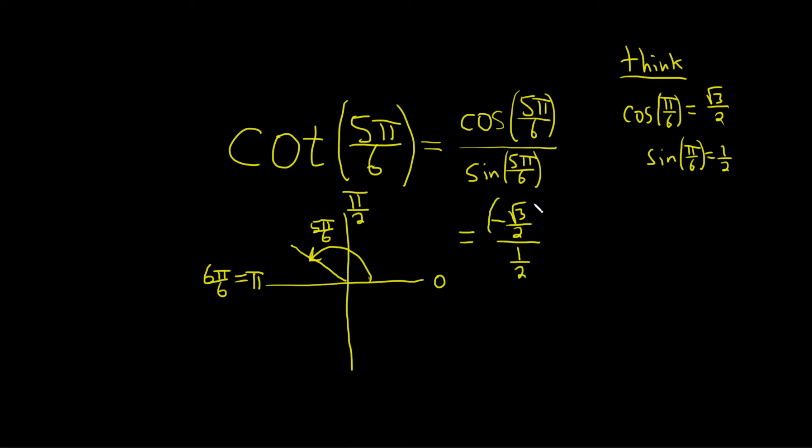It's a lot of information in a simple-looking problem. So we have this, and we're dividing it by 1 half. When you divide by 1 half, you multiply by the reciprocal. So it's times 2 over 1. These cancel, and this equals negative root 3.